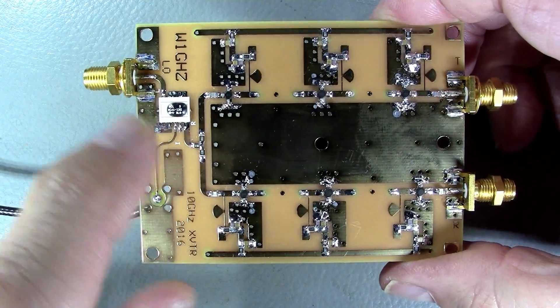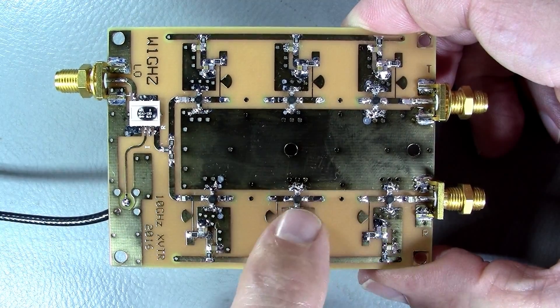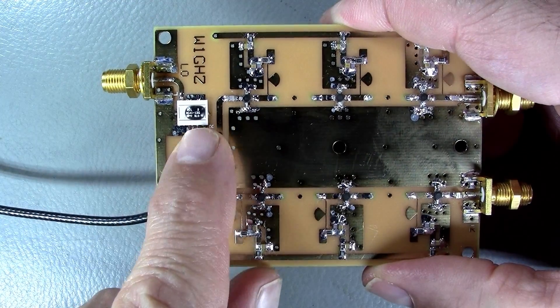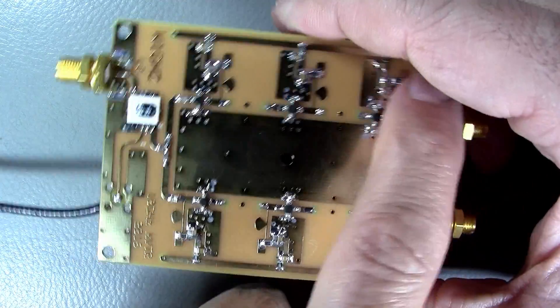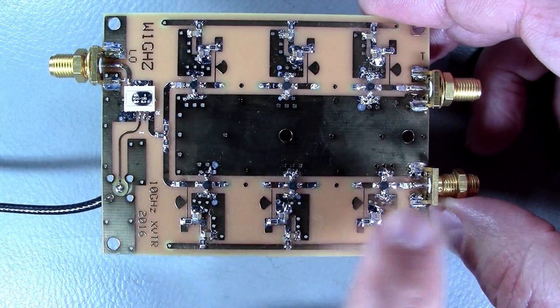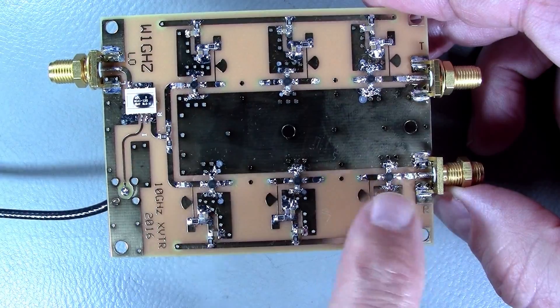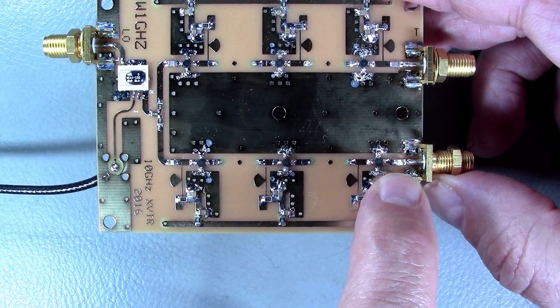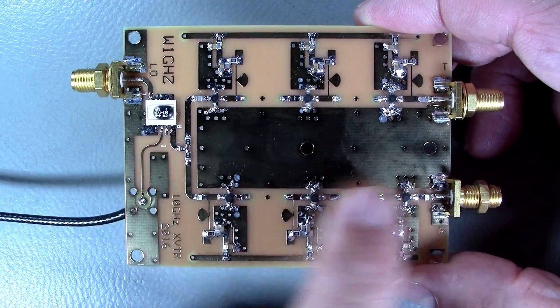I installed all the resistors first, then the capacitors, then the MMIC amplifiers, and finished with the double balance mixer and SMA connectors. On the receive path only, because it's more critical for attenuation and noise, I used ATC ceramic capacitors as coupling caps on the signal path to put all the odds on my side.